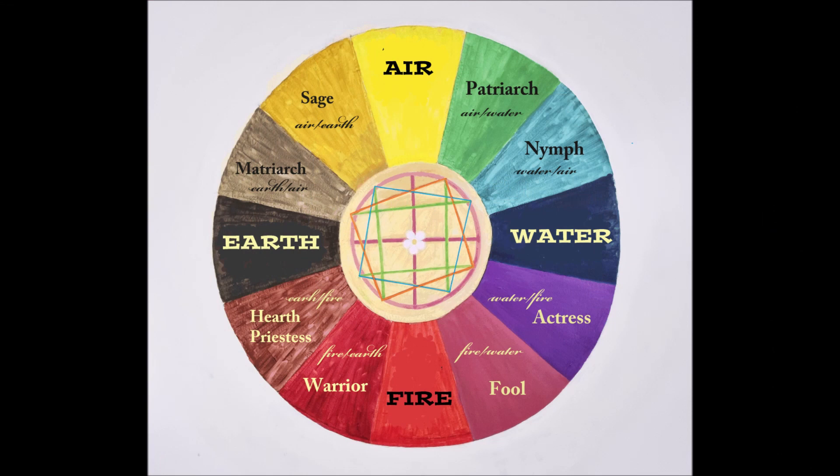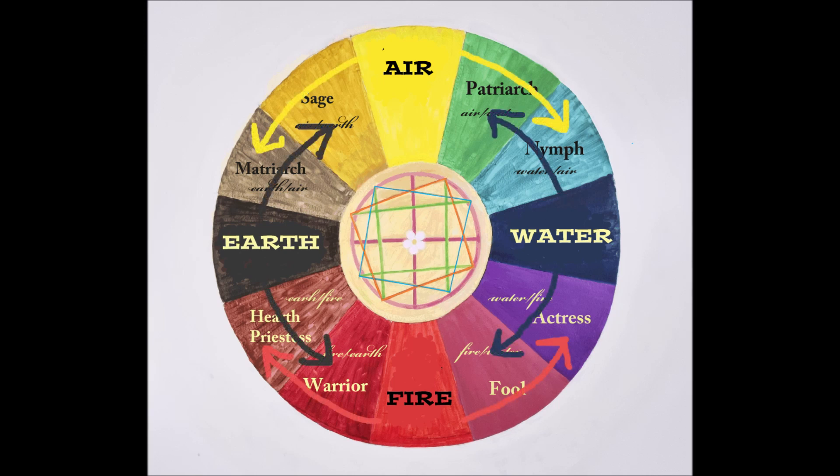We've also found that it almost seems to work in a way where the elemental energies of the Cardinals of Earth, Air, Water and Fire seemingly spread out to their adjacent archetypes which they feed. So you'll see the Jester gives his fire to the Warrior and the Fool, and secondarily to the Hearth Priestess and the Actress. Mother Nature gives Earth to the Hearth Priestess and the Matriarch, and secondarily to the Sage and the Warrior. But in a realistic sense, they give their elements to all of the archetypes, because all of the archetypes actually need all of the elements to manifest in our lives.